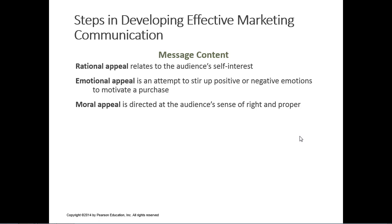Some commercials use rational appeal — functional benefit types of things like miles per gallon, safety measures, headroom and legroom in an automobile — very measurable stuff. Emotional-based appeals try to stir up positive or negative emotion. You see this a lot with perfume or men's cologne, where it's difficult to talk about rational appeals for a particular fragrance.